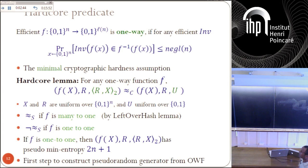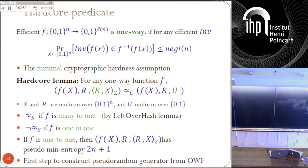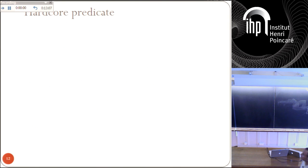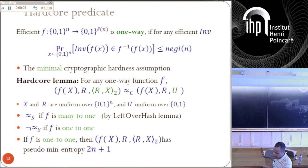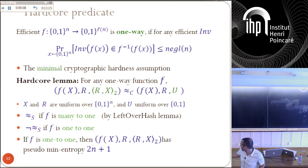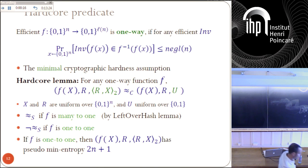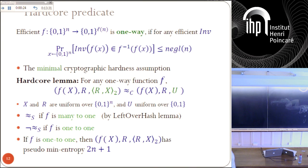This is the first step to construct one of the fundamental results in the foundations of cryptography, which is a pseudo-random generator from a one-way function. So you have X, R — uniform, mutually independent. X and R are mutually independent. And in this case, if f is 1-to-1, this is a deterministic function of X and R. So I spoke about pseudo-entropy, which is the most natural notion of a computational analog of entropy.